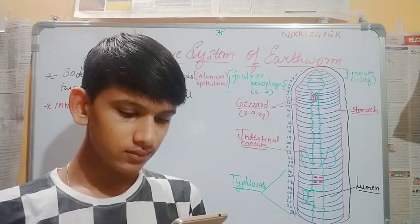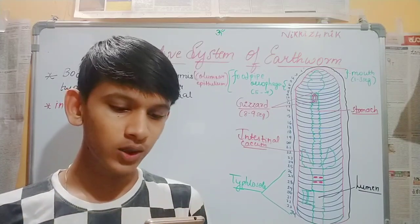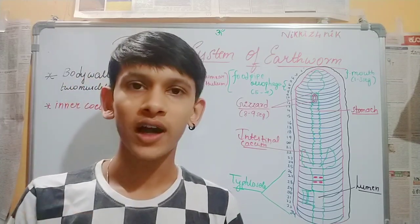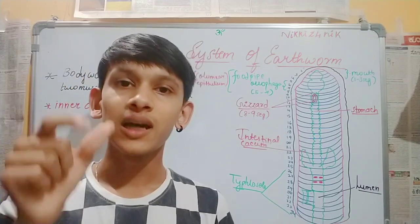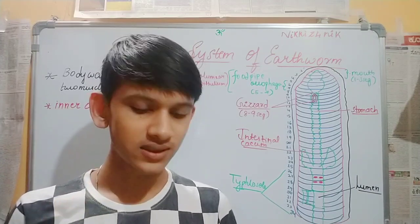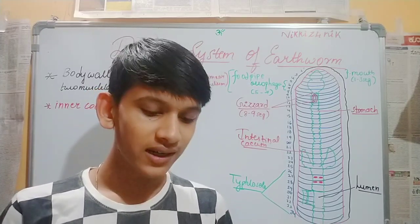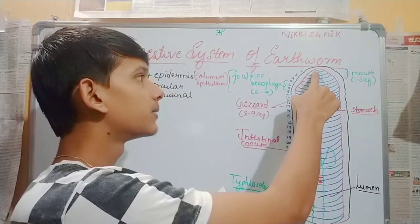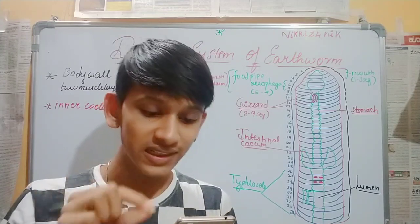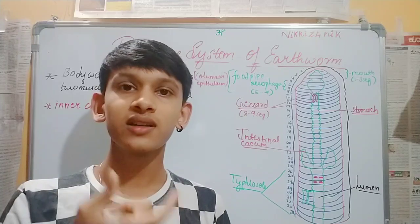The alimentary canal is a straight tube that runs between first to last segment of the earthworm body, around 100 to 120 segments. The terminal mouth opens into the buccal cavity.